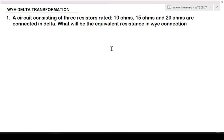A circuit consisting of three resistors rated 10 ohms, 15 ohms, and 20 ohms are connected in delta. What will be the equivalent resistance in wye connection?